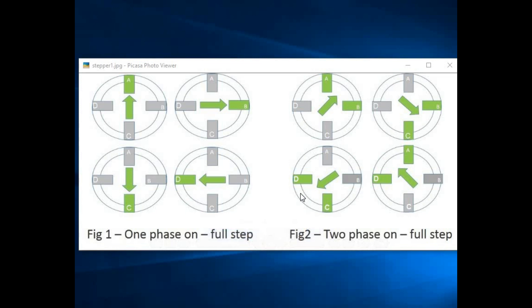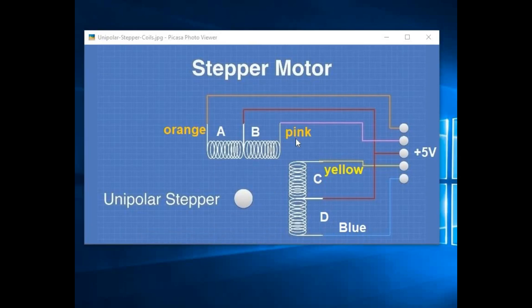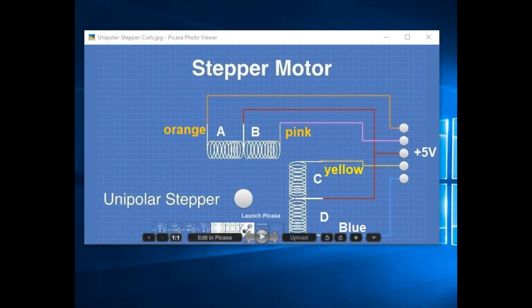Then again, if we energize C and D, the rotor will go to this position. And if D and A, then rotor will go to this position. And if we energize A and B, then the rotor will complete a full rotation. Thus, we can rotate the rotor of the stepper motor by applying current to its coil in a logical sequence. Here we have shown 90 degree rotation only for understanding. And we can also rotate it anti-clockwise by changing the logical sequence.